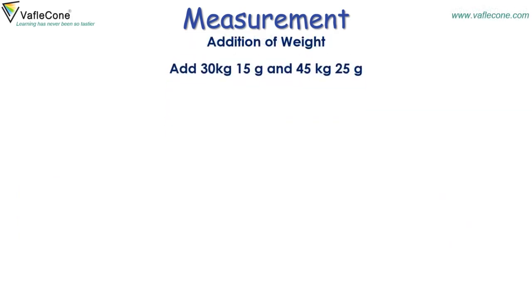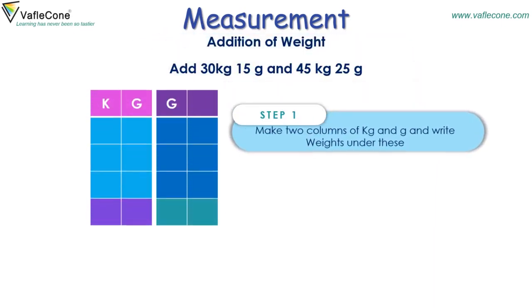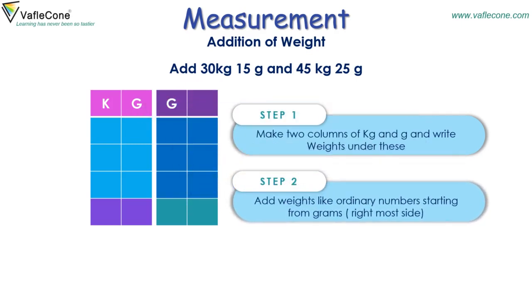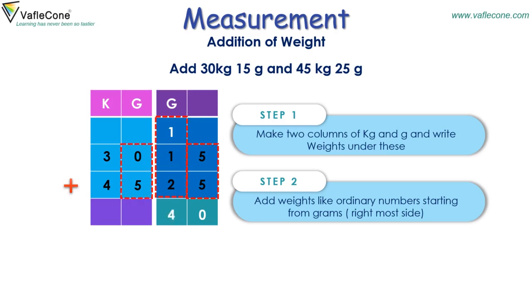Add 30 kg 15 grams and 45 kg 25 grams. Step 1: Make two columns of kilogram and gram and write the weights under these. Step 2: Add weights like ordinary numbers starting from grams. Place 30 and 45 in the kg column and 15 and 25 in the gram column. 5 plus 5 is equal to 10, place 0 and carry 1. Then 1 plus 1 plus 2 is equal to 4. In the kg column, 0 plus 5 is equal to 5 and 3 plus 4 is equal to 7. So the answer is 75 kilograms and 40 grams.